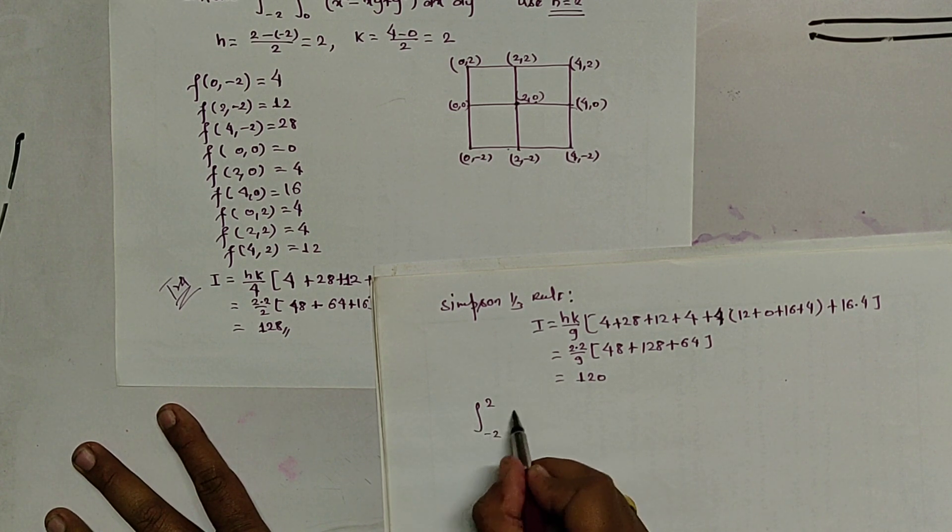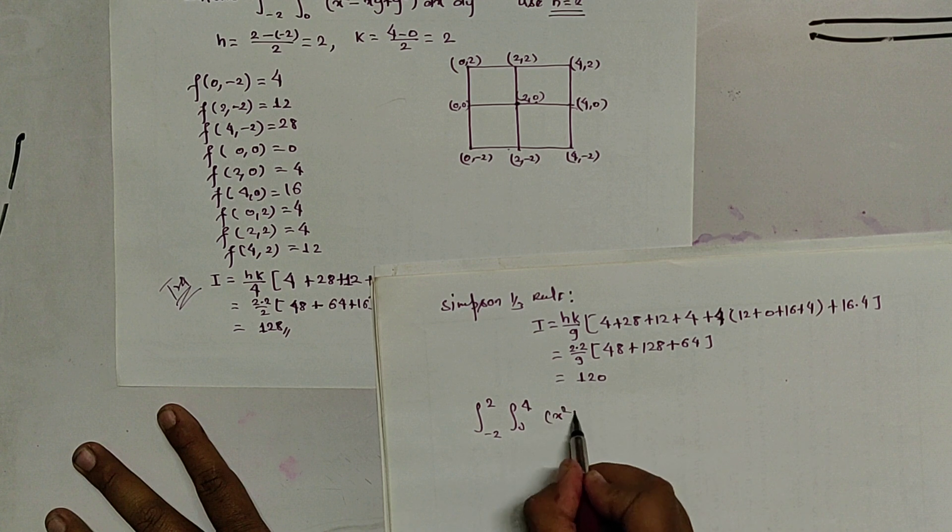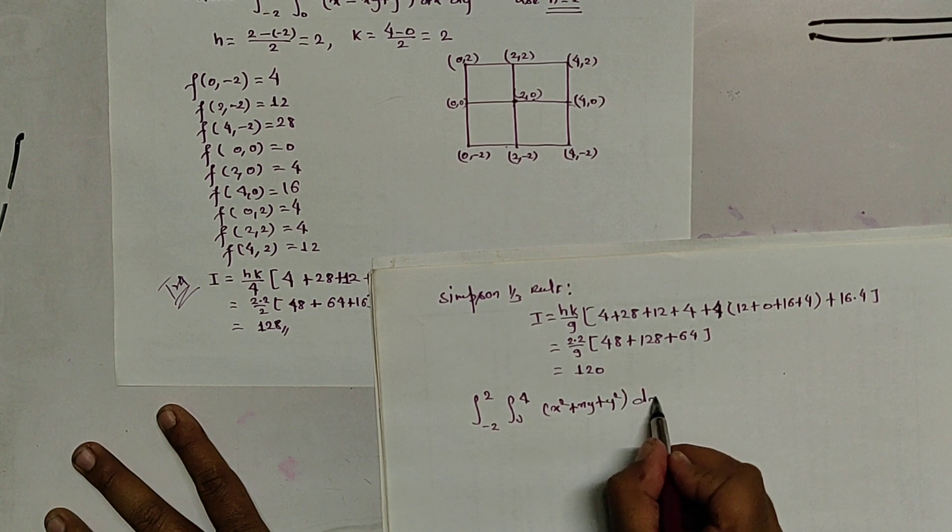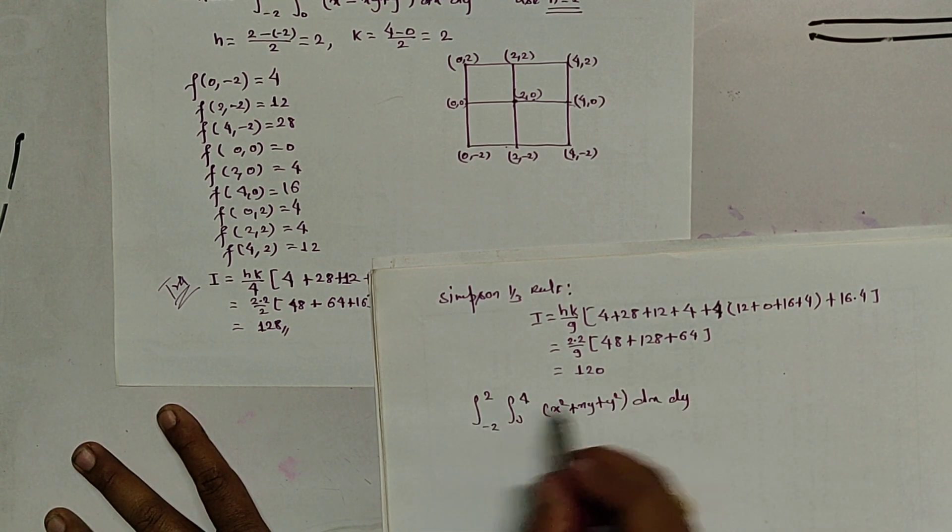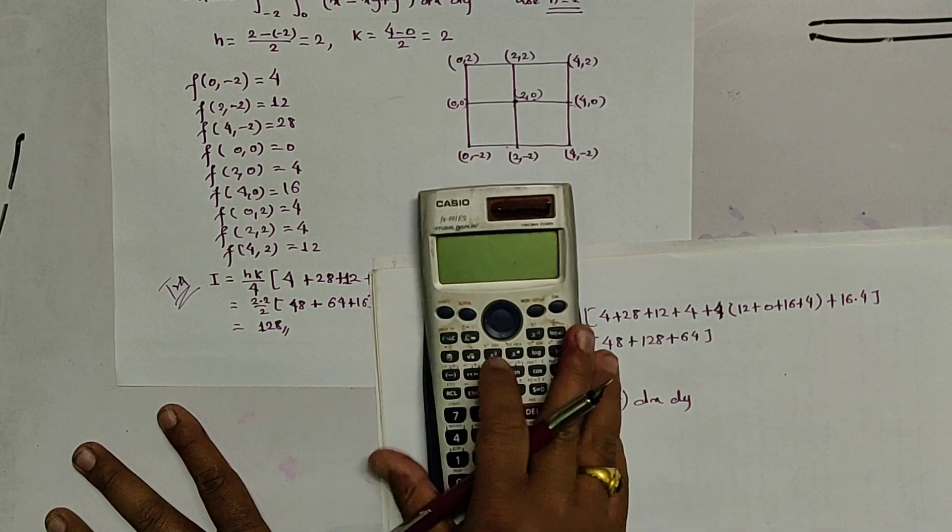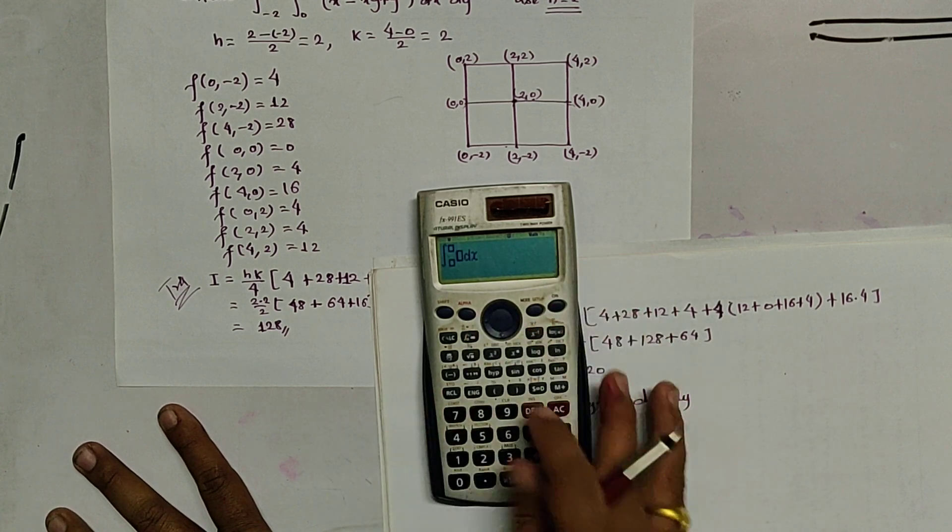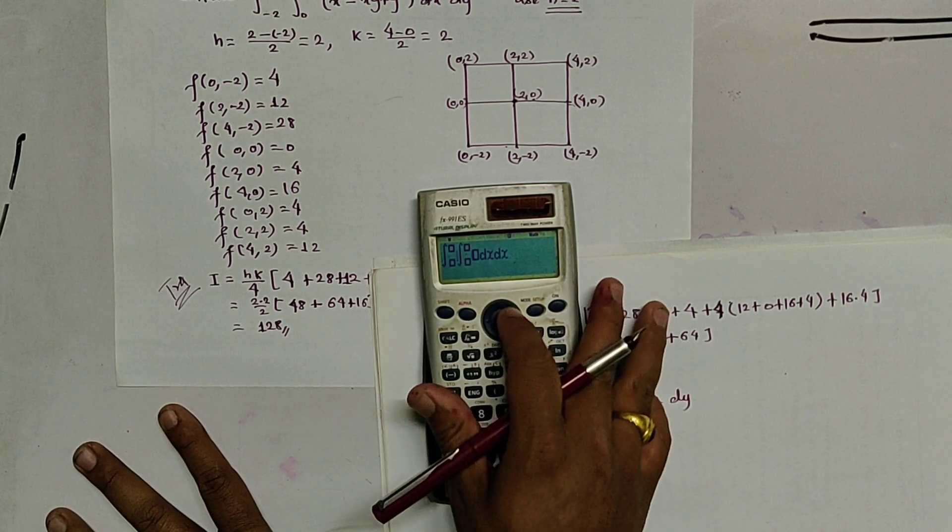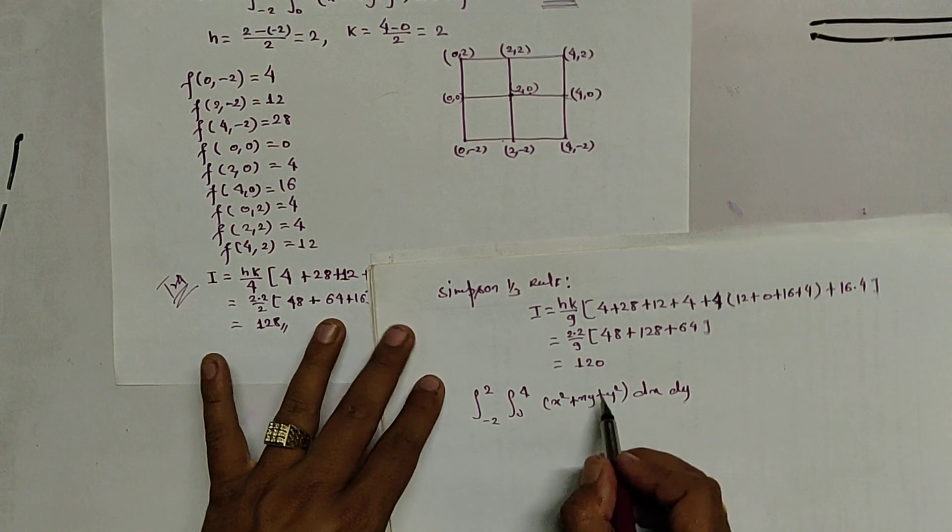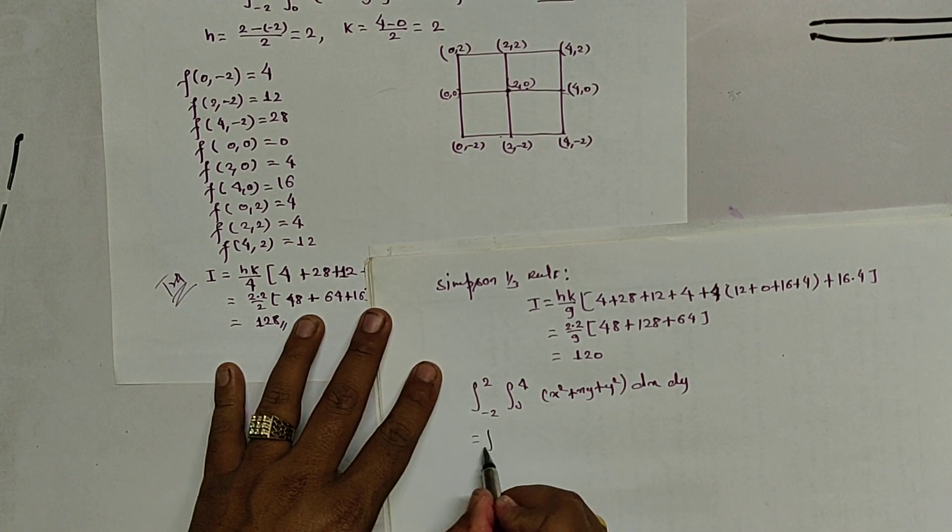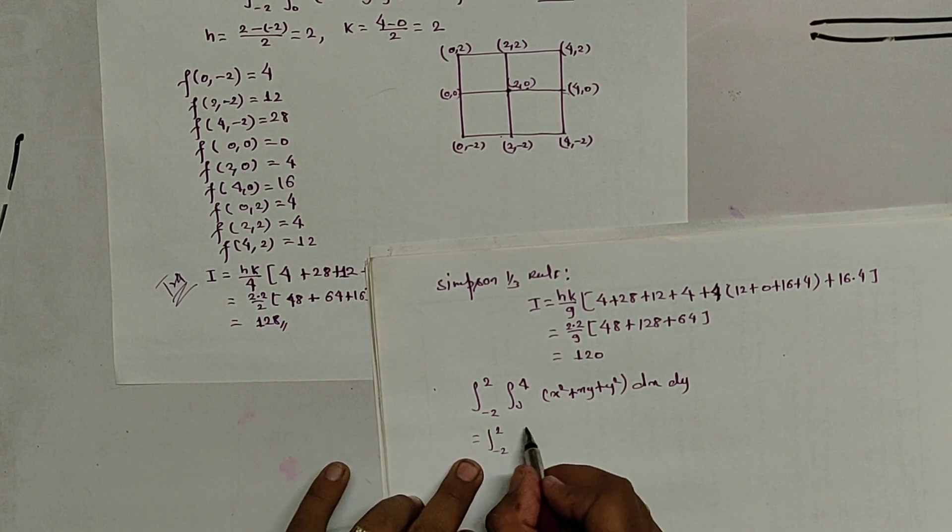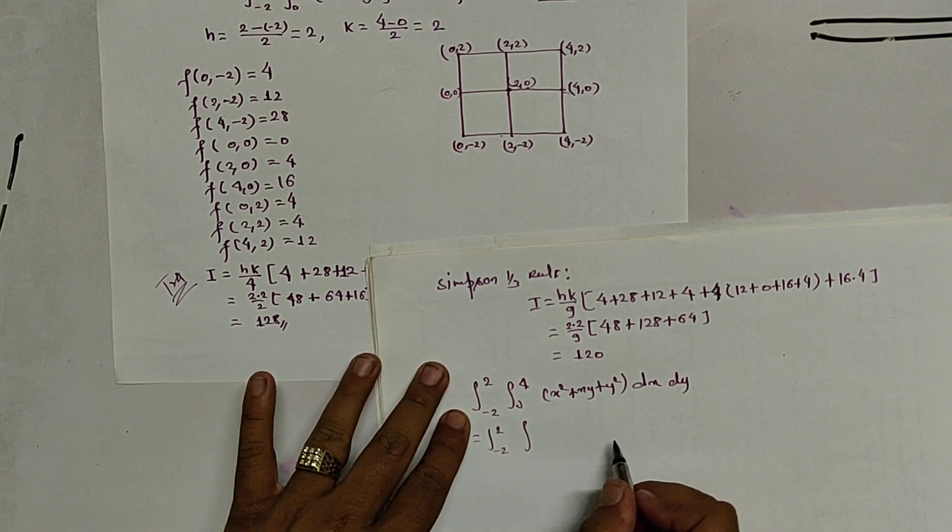So, minus 2, 2, 0, 4, x square plus x, y plus y square, d x d y. And when we solve this, what we get. With respect to y, let us solve it with respect to y.